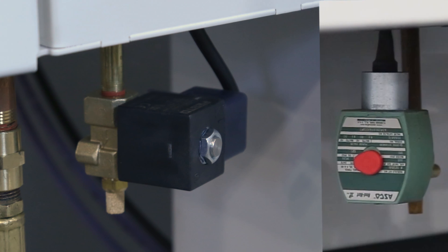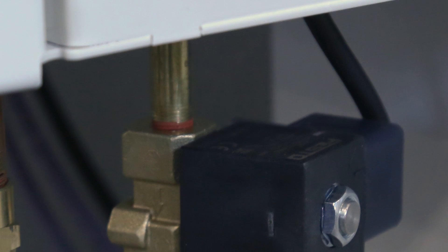If the air purge solenoid on your machine doesn't look like one of these or if you need more help with your air purge system, contact your Haas factory outlet for assistance.